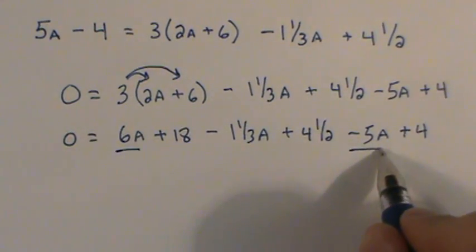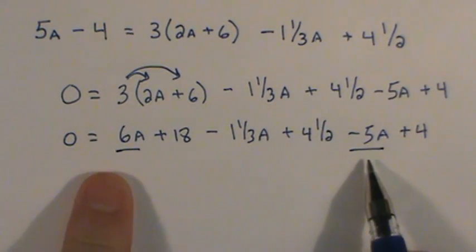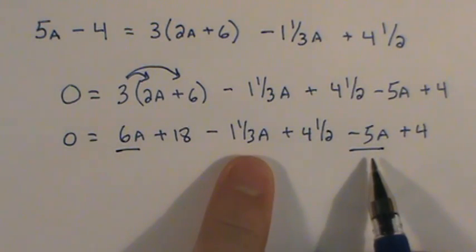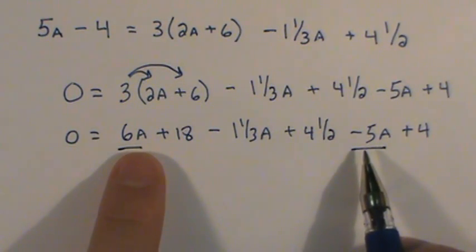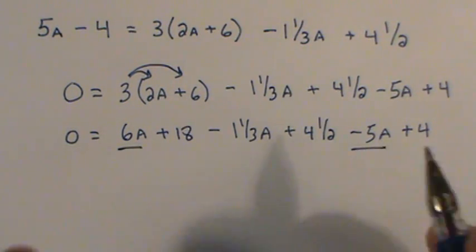Minus 1⅓a plus 4½ minus 5a plus 4. I do that because now I see where I have some like terms I can simplify. I have an a term here, but I'm more interested in the simple things to simplify. So I go 6a take away 5a is a single a.